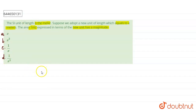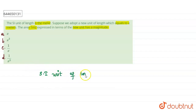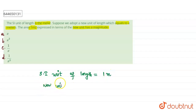So, we can analyze what is given. SI unit of length is equal to 1 meter. New unit of length is equal to x meters.